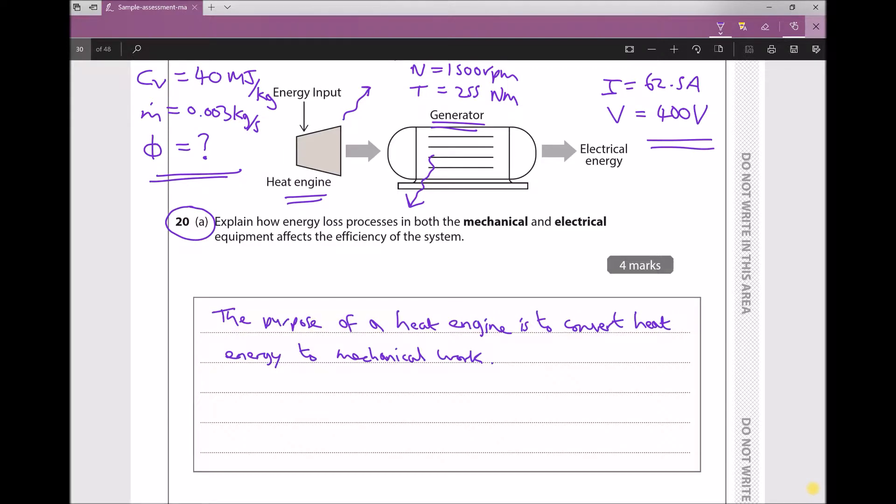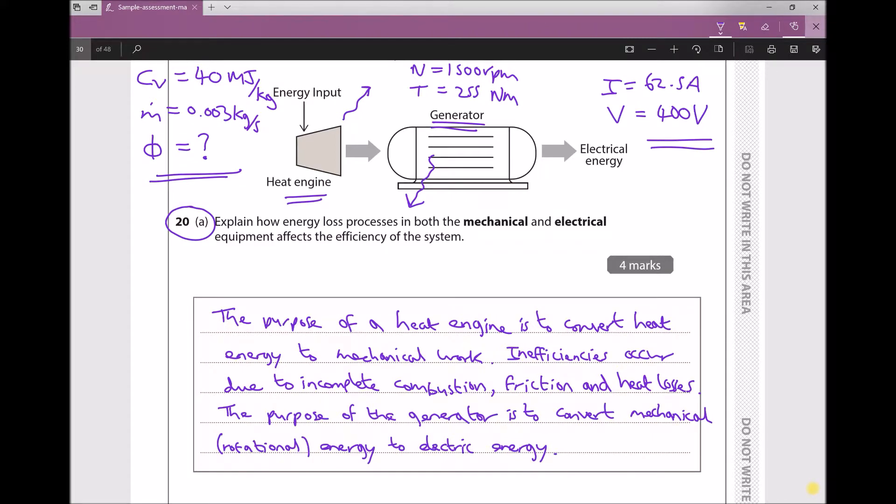We can state where some of those losses occur. We could specify energy may be lost due to incomplete combustion as well as friction in the system and heat losses. Now we can repeat that format for the generator. The purpose of the generator is to turn mechanical energy into electric energy. And we need to finish by saying what some of the sources of losses might be. We mentioned hysteresis and we also mentioned friction in the system. And there we have a clear and concise answer in order to achieve the four marks.